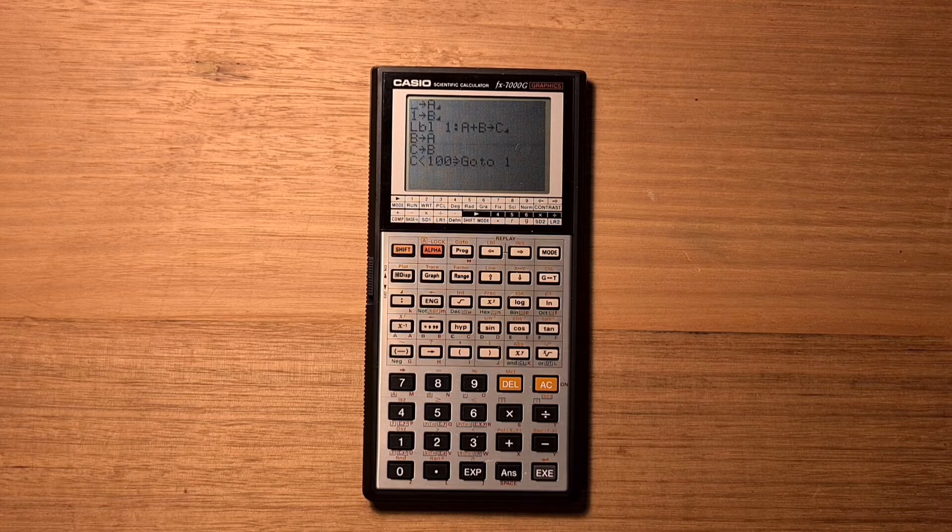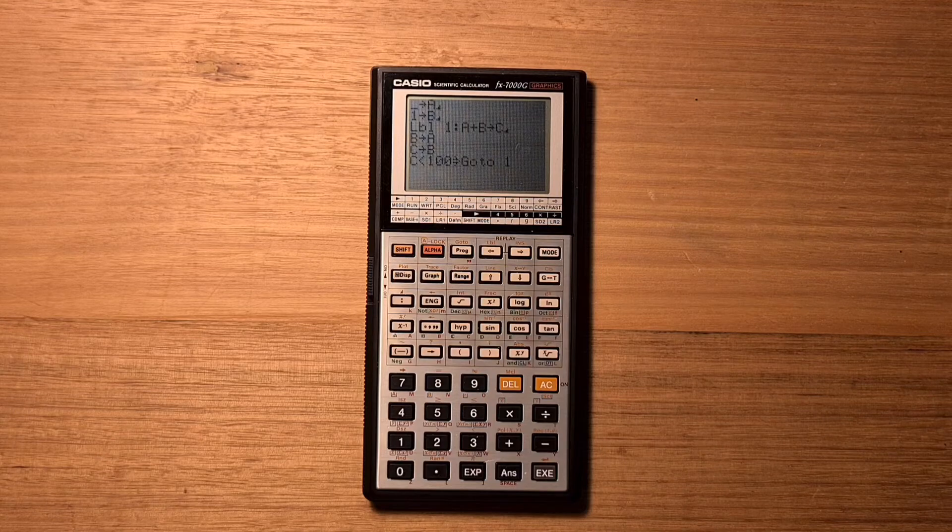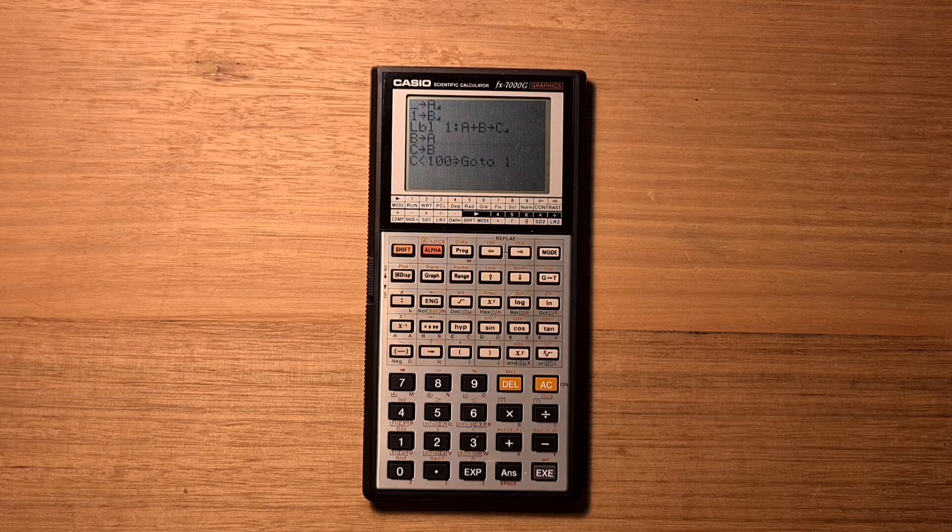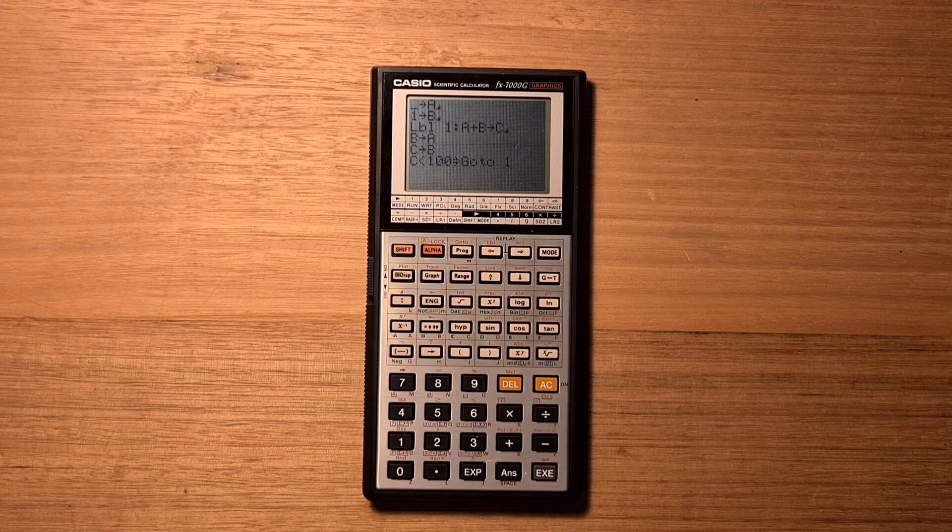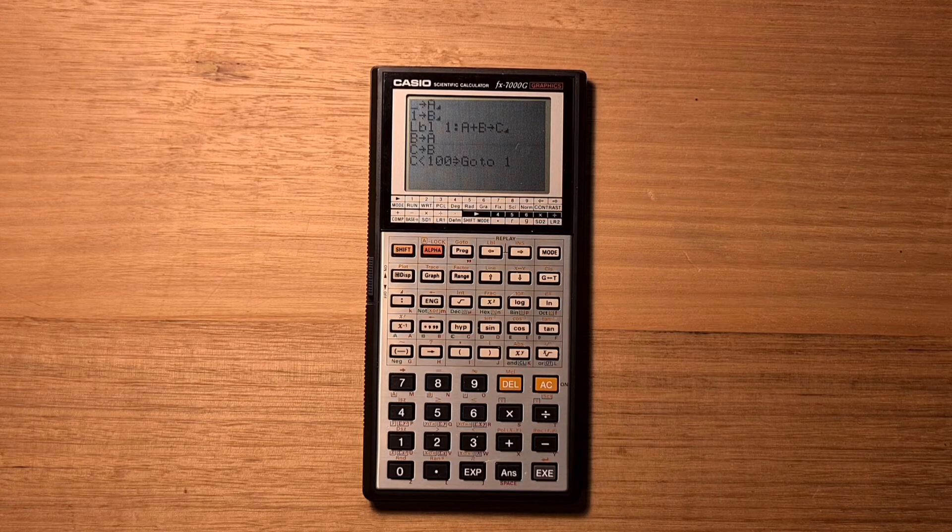So as a refresher, Fibonacci series starts with 0 and 1, and then the next number in the series is the sum of the previous two. So this program starts by assigning 0 and 1 into variables a and b.